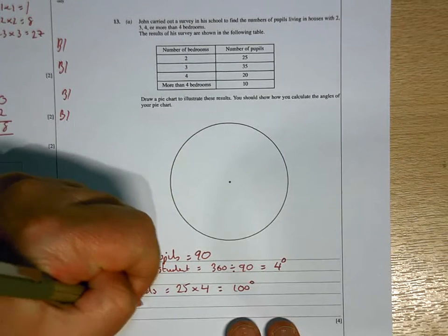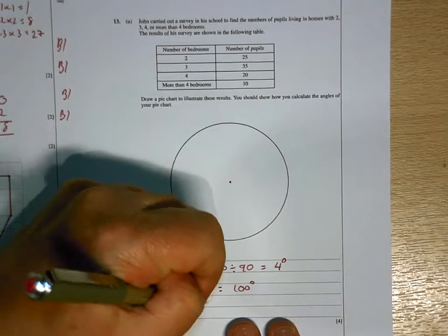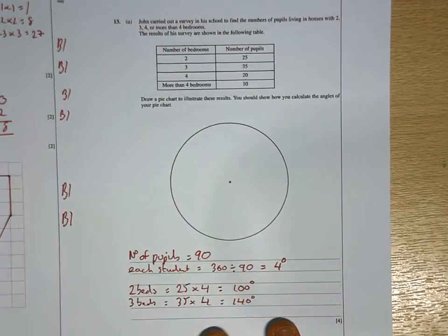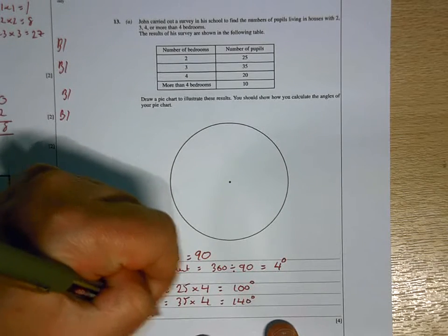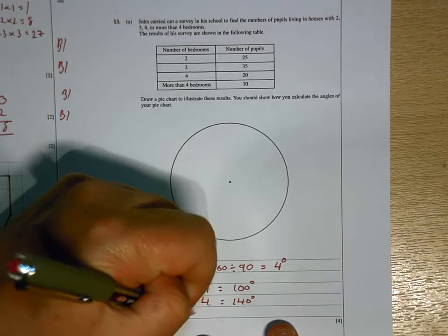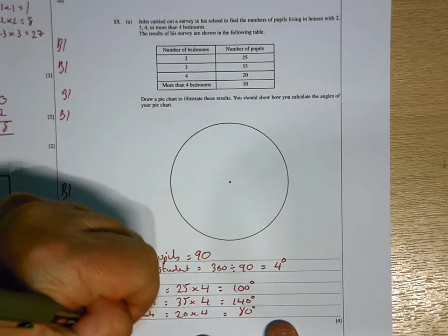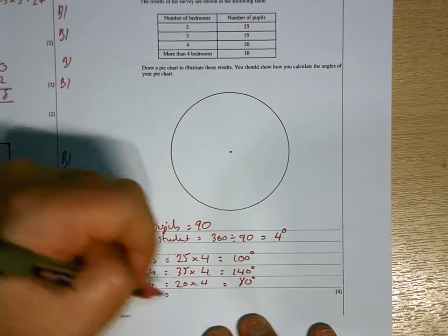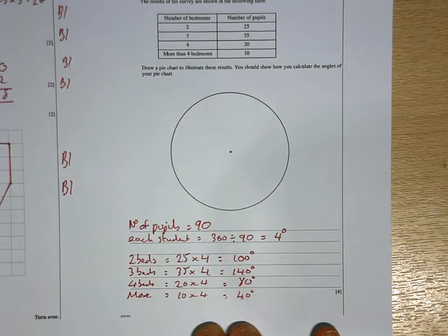So double 25, double 50, double again 100. So 100 degrees would be the size of that slice. For the three beds, it will be 35 times 4. Double it, 70, double it again, 140 degrees. 4 beds would be 20 times 4, which is 80 degrees. And then more would be 10 times 4, which is 40 degrees.